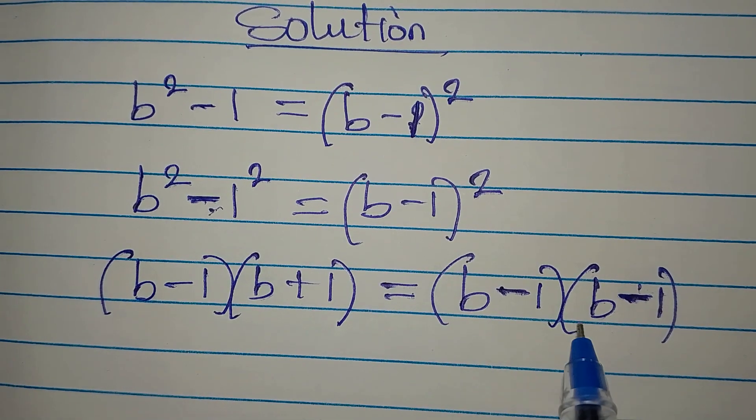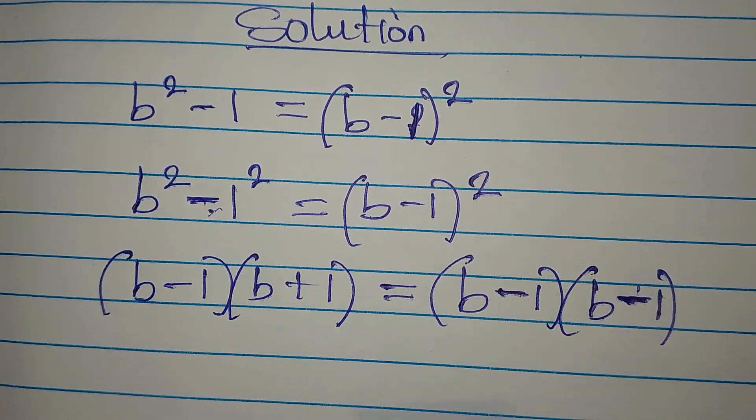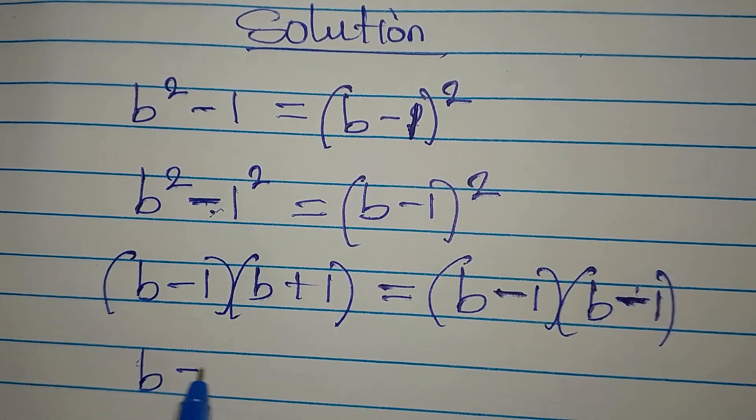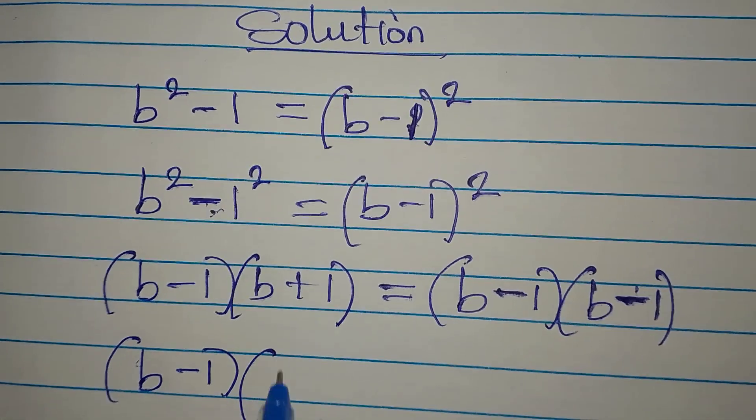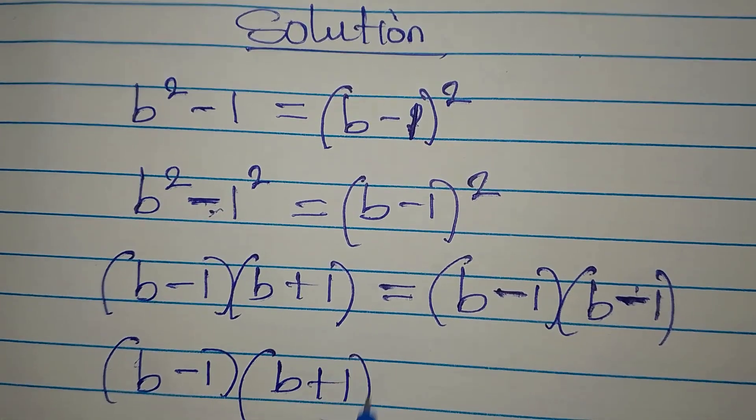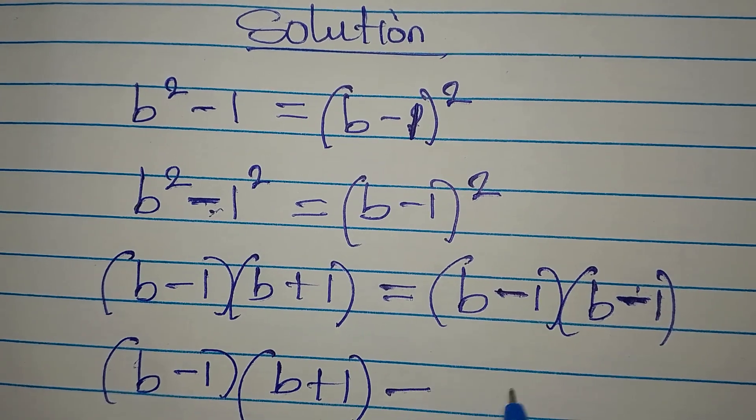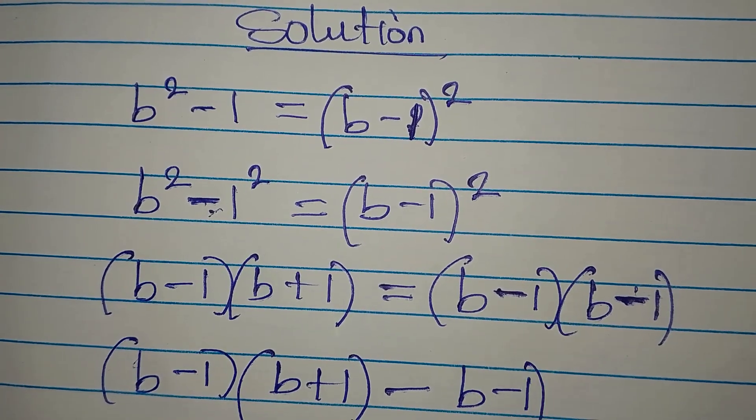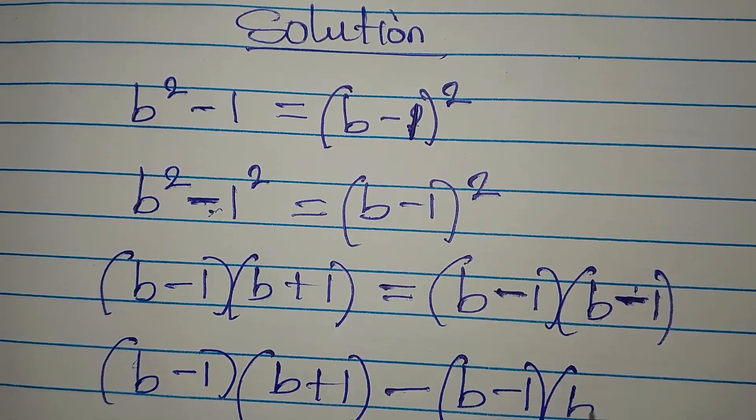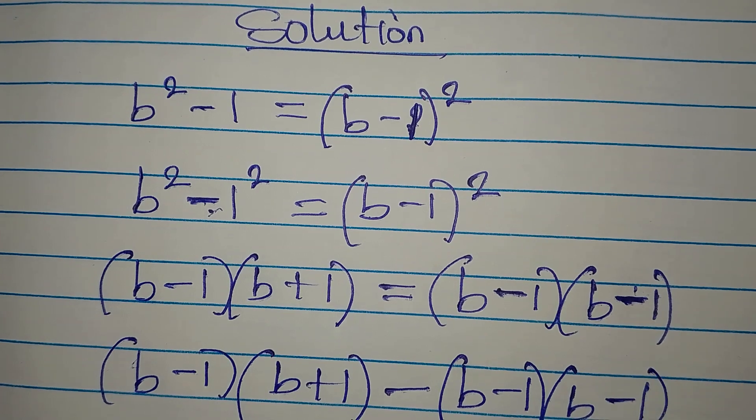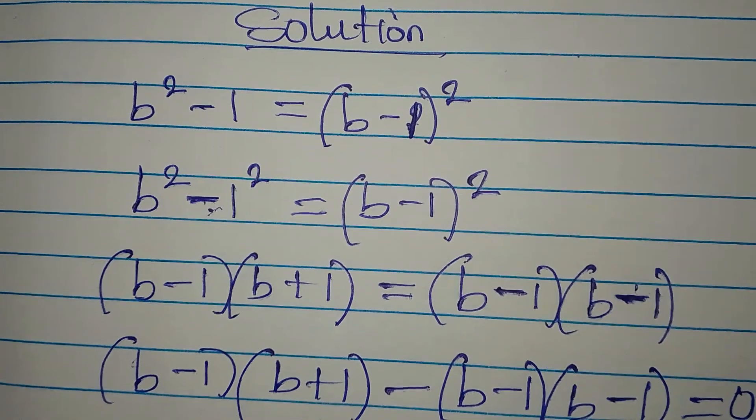Now let's continue. Why don't we bring this to the left? So if I do that, I'll have b minus 1 into b plus 1. Then this will turn to minus, we have b minus 1 in brackets into b minus 1. Then we equate this to 0.